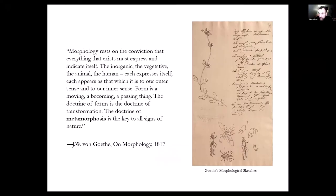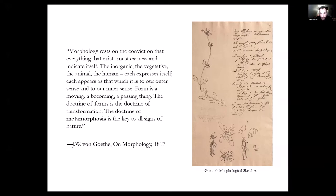Goethe actually coined the term morphology. Morphology is a precursor to biology — how we understand biological forms today was understood at the intersection of chemistry, physics, and biology during the 18th century. Goethe defines morphology as a bridge between different sciences. He says: 'Morphology rests on the conviction that everything that exists must express and indicate itself — the inorganic, the vegetative, the animal, the human. Form is a moving, a becoming, a passing thing. The doctrine of forms is a doctrine of transformation.'